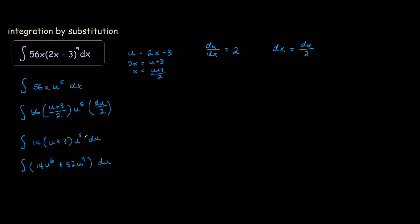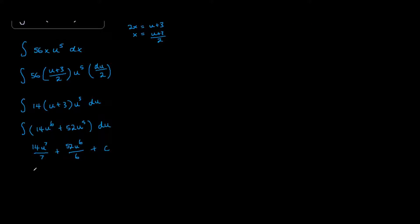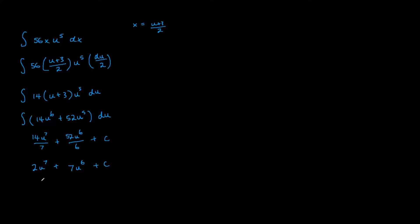What's this normal integration where you raise the power by 1 and divide by a new power. So here we would have 14u raise the power by 1. So 7 divided by a new power plus 52u to the power 6 divided by a new power plus some constant. This simplifies down to 2u to the power 7 plus 7u to the power 6 plus c. Now we can factor out the u to the power 6. You get u to the power 6 of 2u plus 7 plus c.